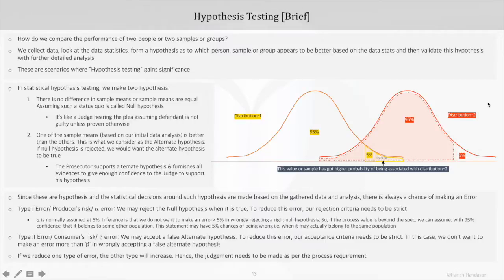Do remember always that if we reduce one type of error, the other type will increase. So the judgment needs to be made as per the process requirement. Like if we take the court of law example, our null hypothesis was that defendant is not guilty.